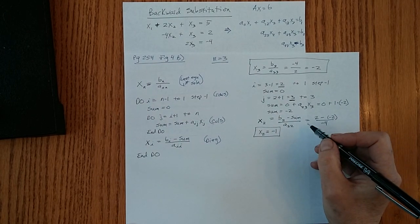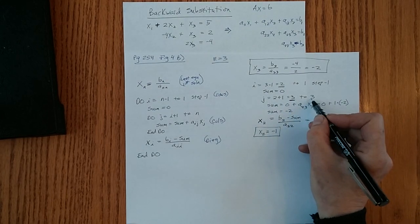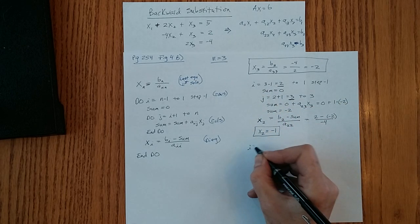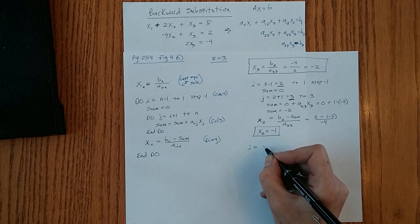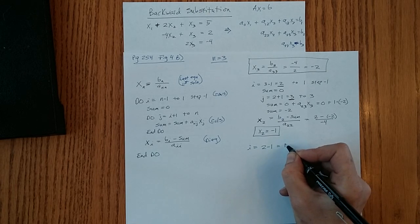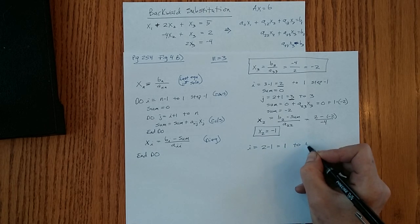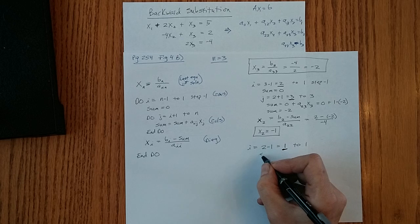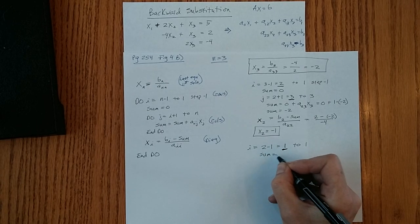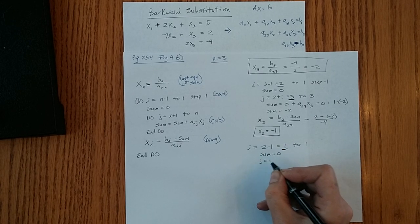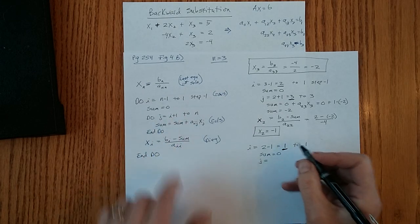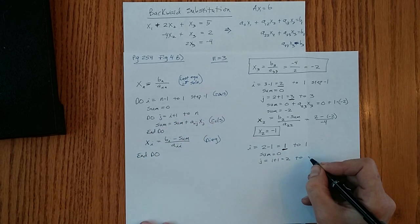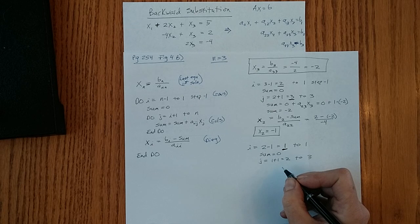Okay, so we've gone through j the one time. i is set to 2. Now i gets set to 2 minus 1 is 1. And we're going to 1, so we're only going to do this one more time. So i of 1, we reset sum to 0. j gets set to i plus 1. 1 plus 1 is 2, and goes to n, 3. So we will do this loop two times.